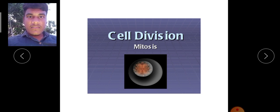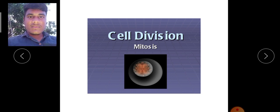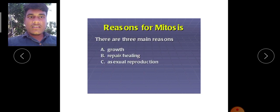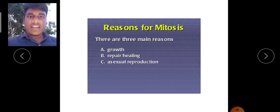That is the reason why we gained this much weight, from 2 to 3 kg to 60 to 80 kg. This is how cell division is happening in all the living creatures. What are the reasons for cell division? Why does cell division have to take place? There are 3 main reasons.